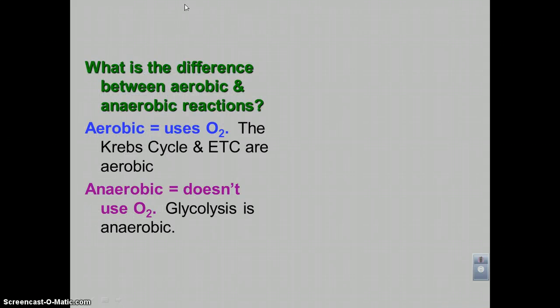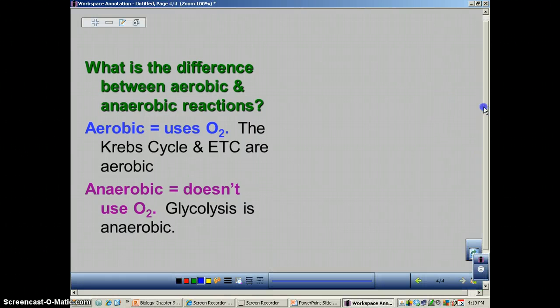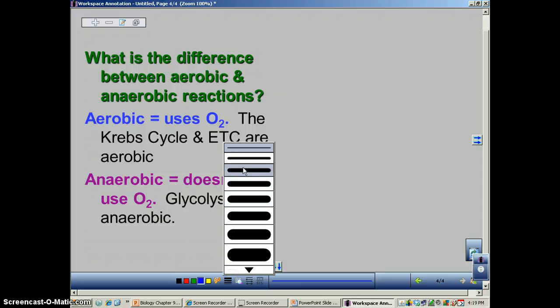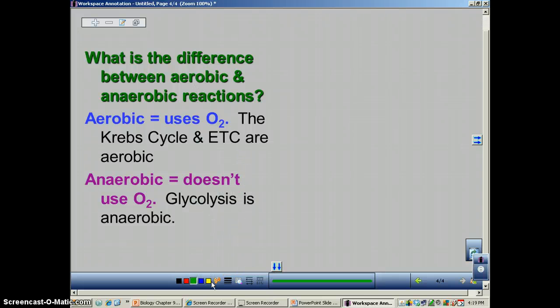Now what's the difference between aerobic and anaerobic? Well, just like most biology words, the word is telling you what's going on. Aerobic kind of sounds like the word air. And if you think about what's the most important thing in the air that we breathe, it would be oxygen. So aerobic means you use oxygen. Now if you put the 'an' in front of the word, that means no. So anaerobic means no oxygen. It does not use oxygen.